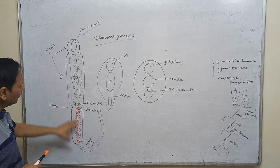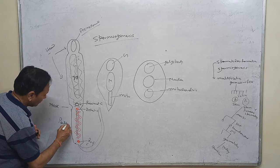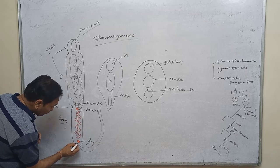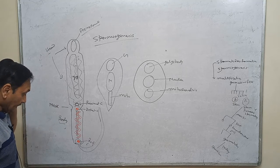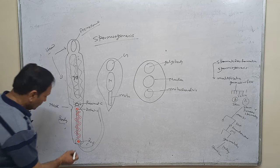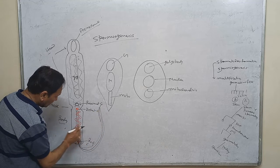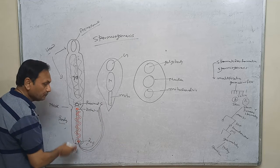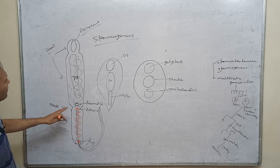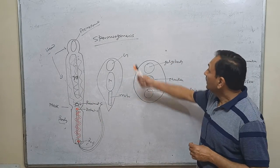The centrioles help control the activity of the body part. The movement of the tail is controlled by the axial rod, and energy for the lashing movement is provided by the mitochondria. The sperm has no nutritional experience of its own. That is all about the structure of the sperm and spermiogenesis.